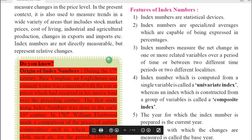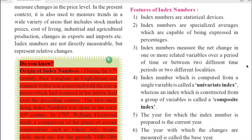Let us now understand some important features of index numbers. There are 8 to 10 important features. The first feature: index numbers are statistical devices — which is clear from the definitions themselves. The second feature: index numbers are specialized averages which are capable of being expressed in percentages. The third feature: index numbers measure the net change in one or more related variables over a period of time, or between two different time periods or two different localities.